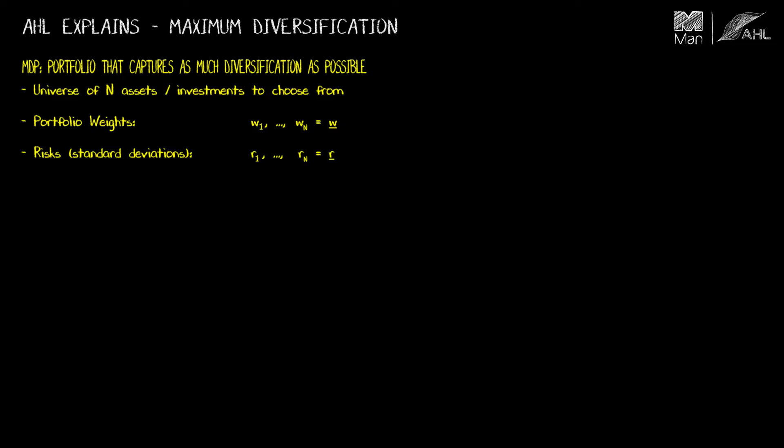The other thing I need is the correlation matrix C that describes the correlation between each pair of assets. Remember this is a correlation matrix, so it's symmetric, it's got ones down its diagonal, and the off-diagonal elements are all the individual correlations between each pair of investments.